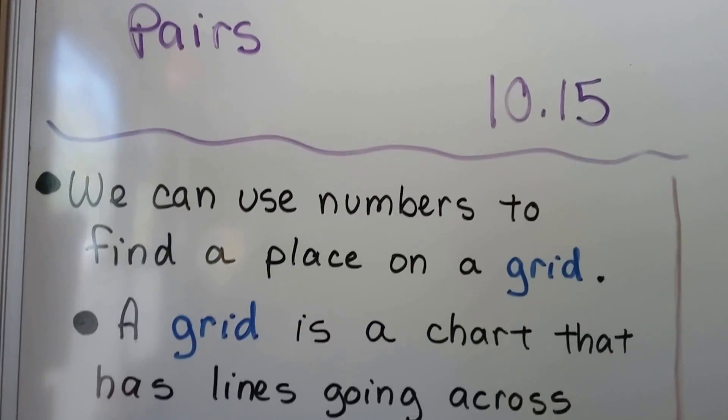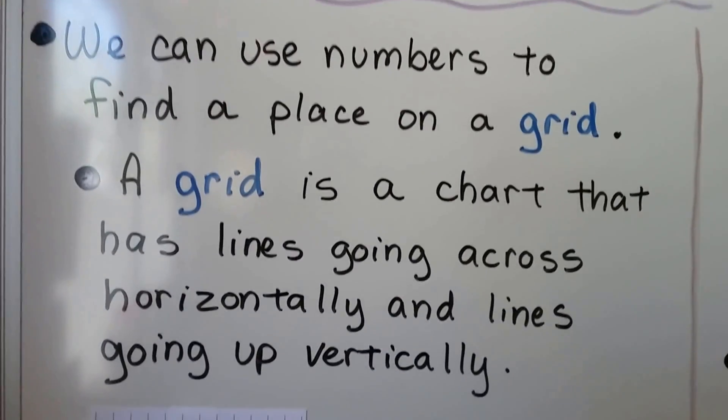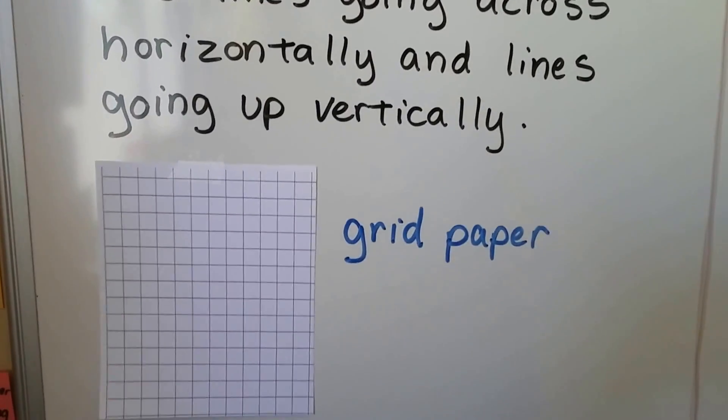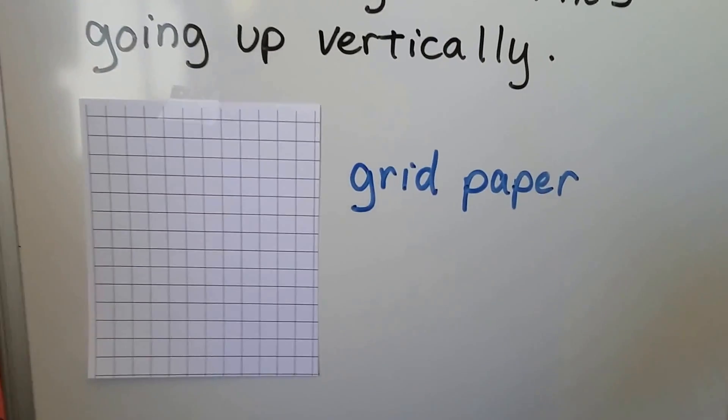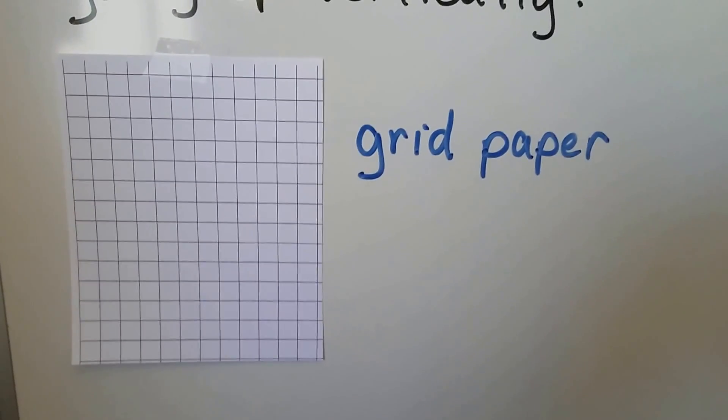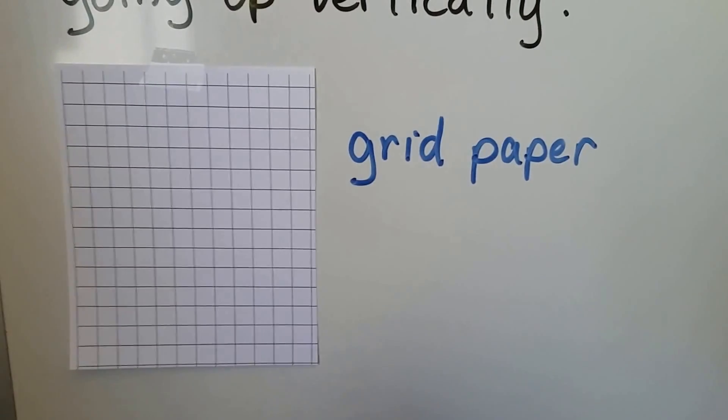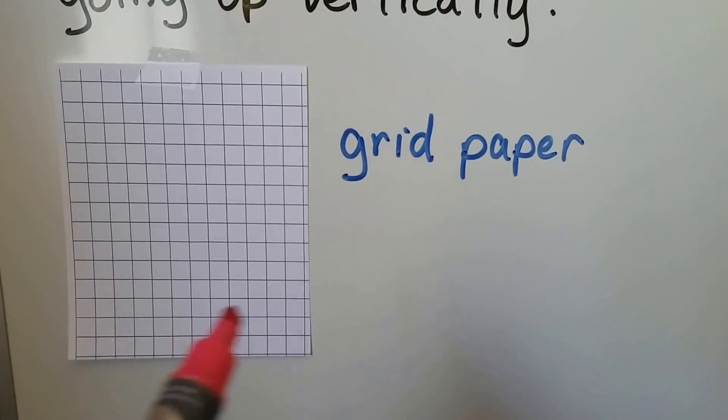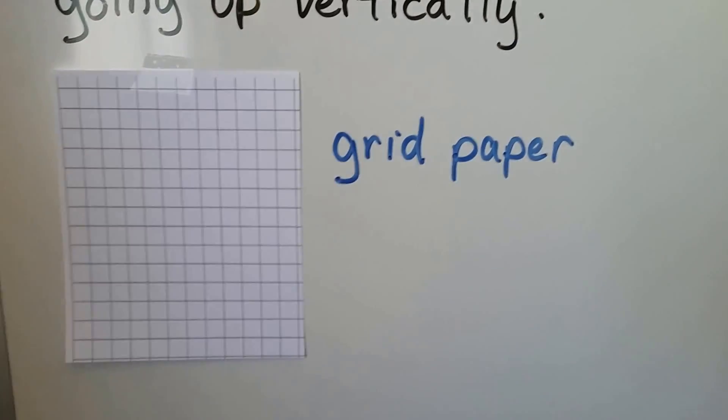We can use numbers to find a place on a grid. A grid is a chart that has lines going across horizontally and lines going up vertically. So here's a grid paper. It looks like it has lots of squares on it, but what's important is it has lines going across and lines going up.